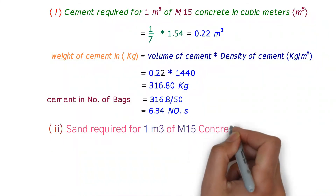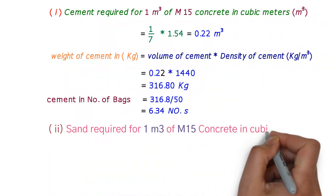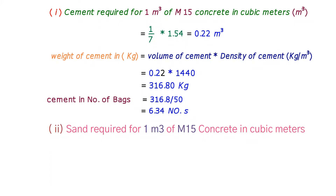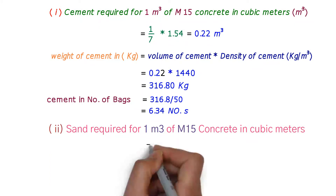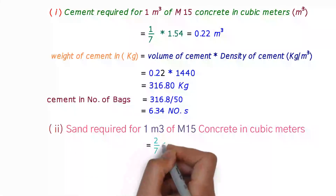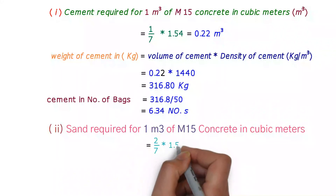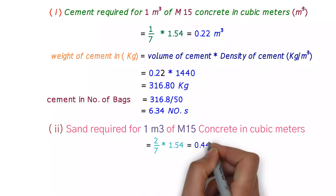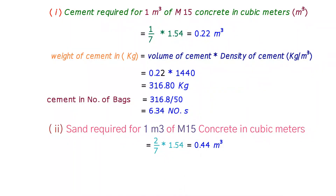Next, the sand required for one cubic meter of M15 concrete: the volume of sand required is (2/7) × 1.54, which equals 0.44 cubic meters.